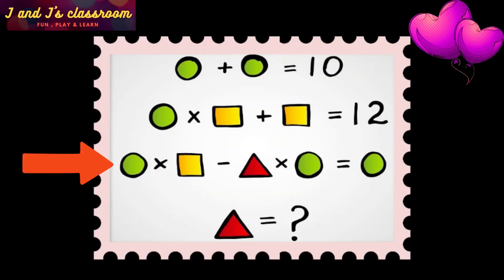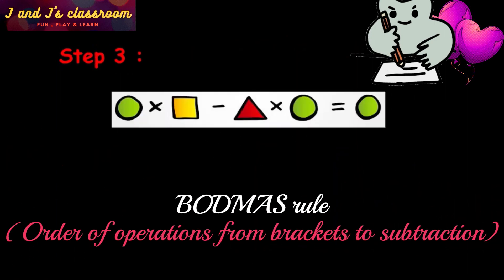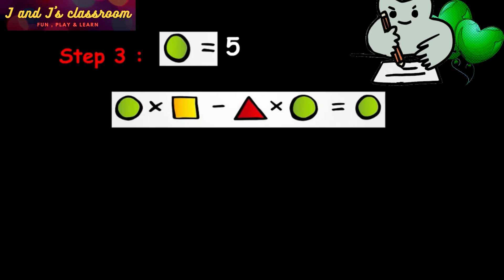Next, let me move to step 3. Here also, according to the BODMAS rule, we are going to find the difference between two product values. First one is the product of circle and square, and the second one is the product of triangle and circle. Then we get the difference is circle. Already we found the value of circle and square. Now apply these two values.